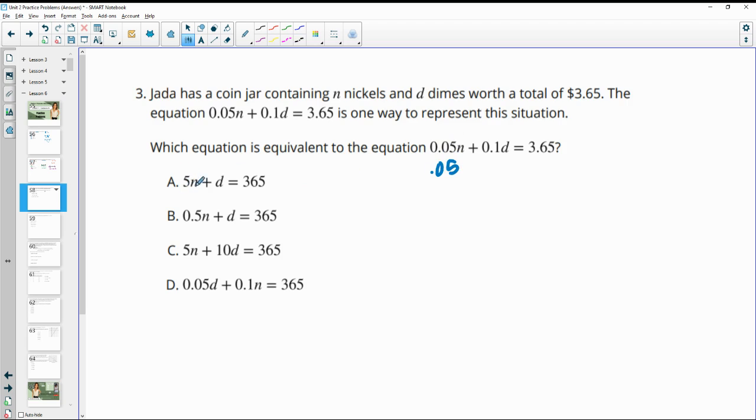But this would say 1 cent per dime. And dimes are 10 cents. So this is not going to be equivalent. And really what they did was they're trying to multiply this whole thing by 100. So 100 times 0.05 is 5. 100 times 0.1 is 10. And then 100 times 3.65 would be 365. So this would be represented in pennies instead of dollars.